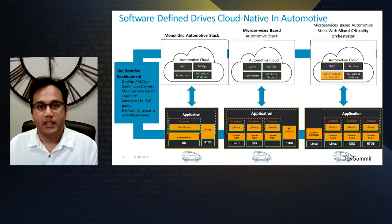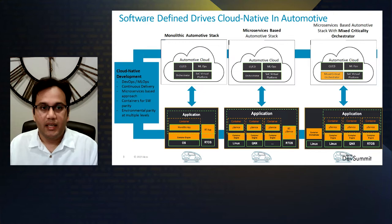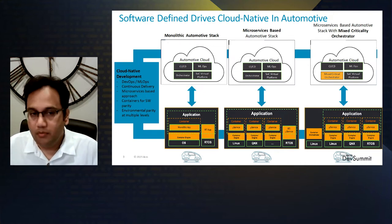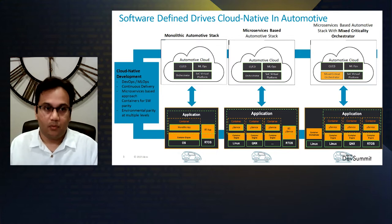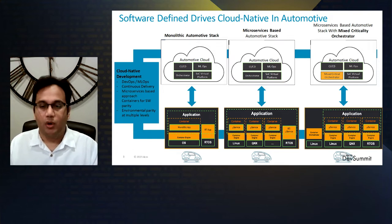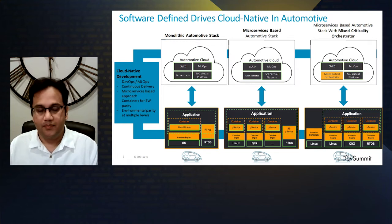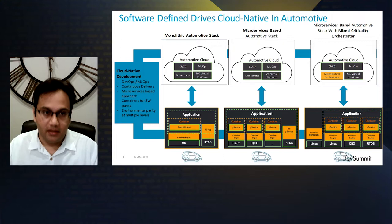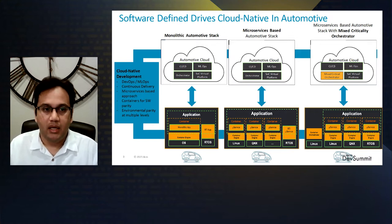When we look at software-defined vehicles, one of the key technologies driving it is the adoption of cloud native. When we say cloud native, it is typically comprised of developing applications in a containerized way as microservices, having a complete mature CI/CD framework built in the cloud, and then deploying using orchestration frameworks like Kubernetes. This design paradigm has matured in the data center, and today we see it being applied to automotive software development.